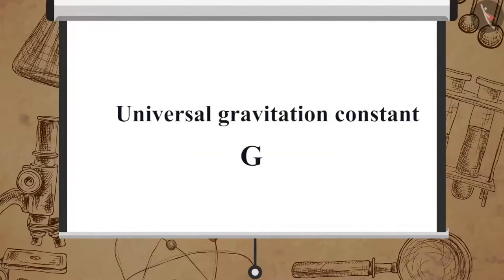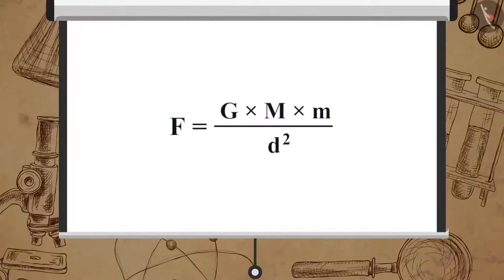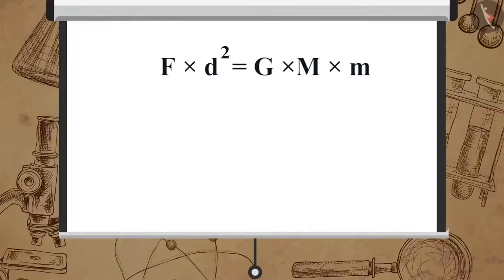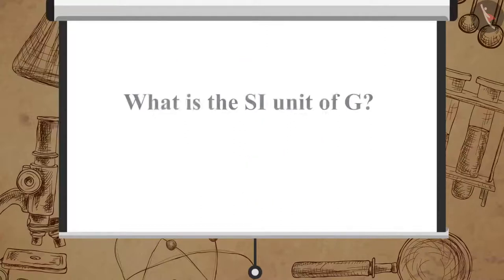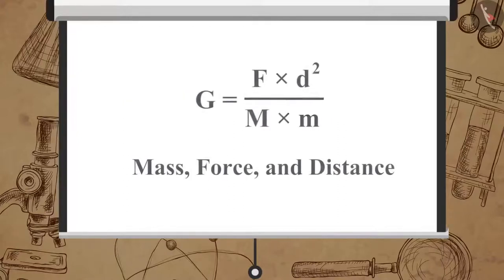Now, let us see the mathematical formulae for universal gravitation constant G. From this equation, we can get F multiplied by d square is equal to G multiplied by M multiplied by m, or G is equal to F multiplied by d square upon M multiplied by m. Can you determine the SI unit of G from the previous equation? We can find the SI unit of G by substituting the units of mass, force and distance in this equation. The SI unit of G is Newton meter square per kilogram square.